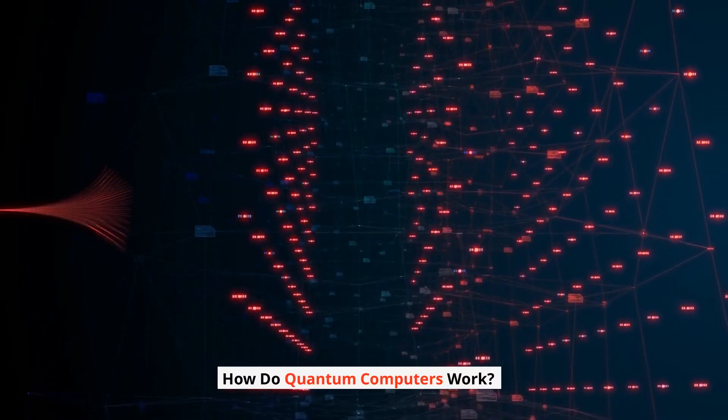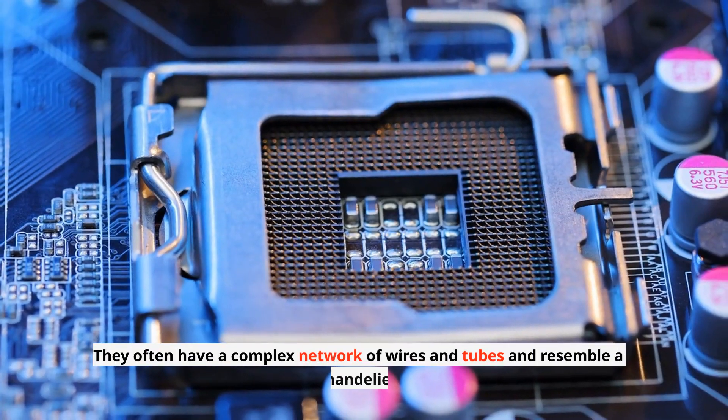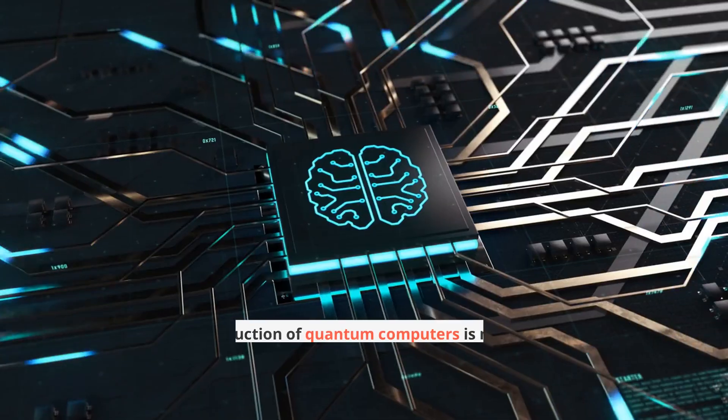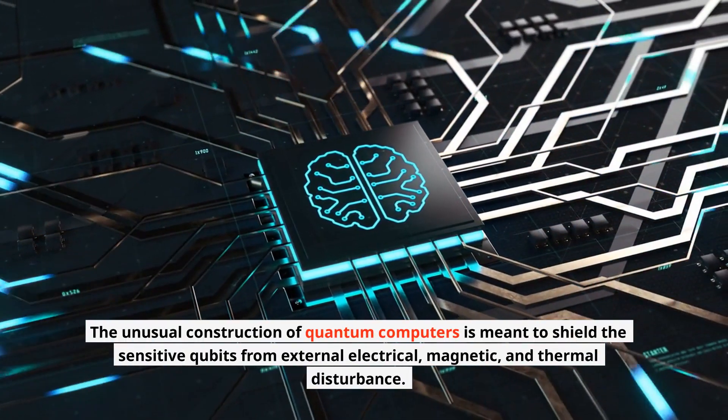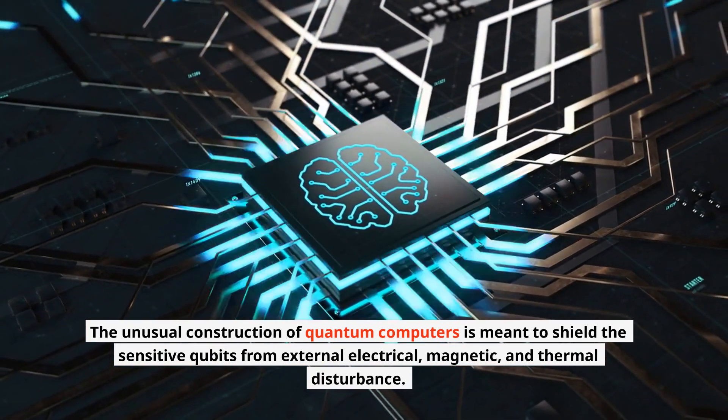How do quantum computers work? Traditional computers have nothing on quantum computers. They often have a complex network of wires and tubes and resemble a chandelier. The unusual construction of quantum computers is meant to shield the sensitive qubits from external electrical, magnetic, and thermal disturbance.